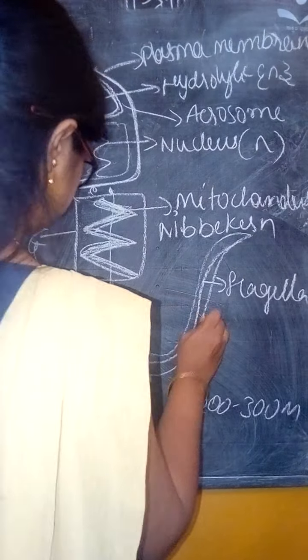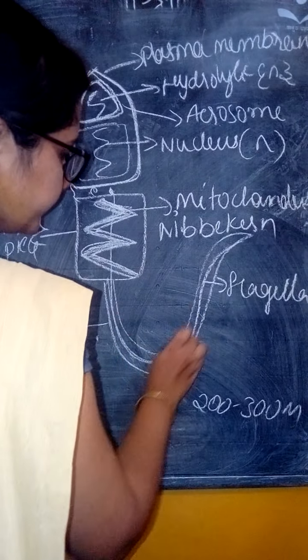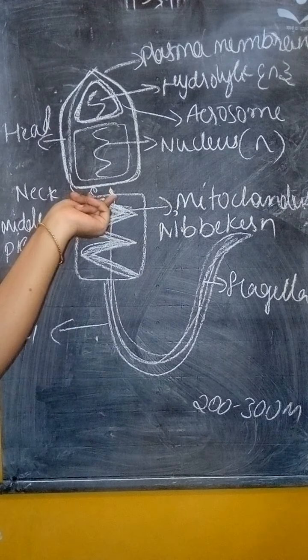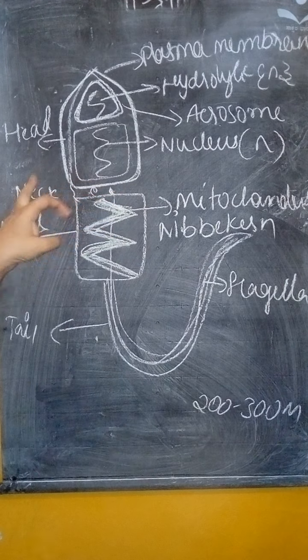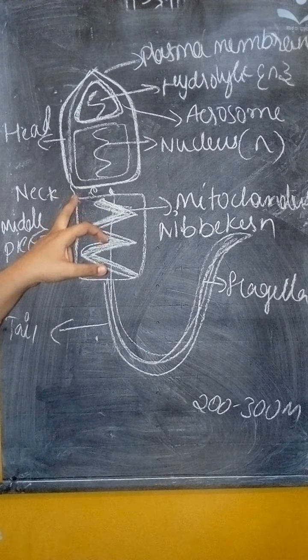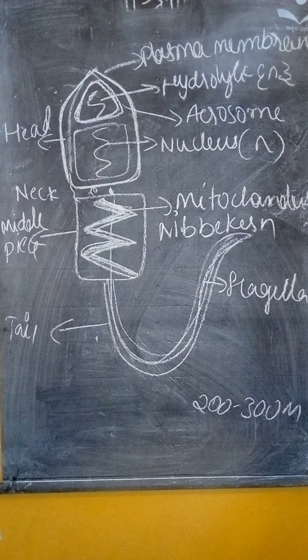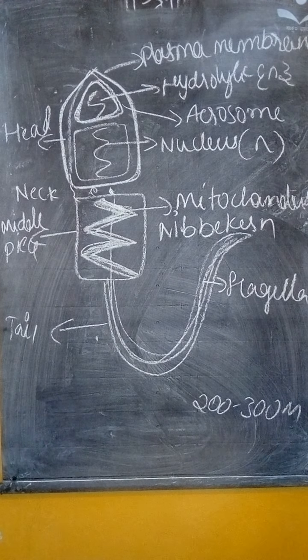This is the tail. The tail provides movement of the head through the presence of flagella. At the neck there is a proximal end and distal end. This is the structure of sperm.